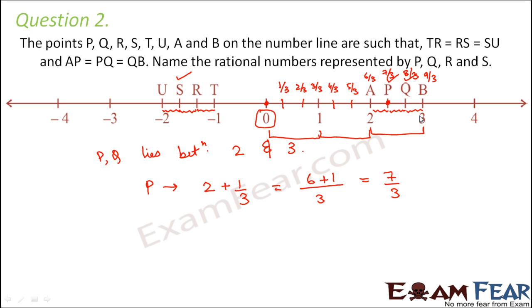So this is also another way of looking at it. So from both the approach, what do you see? You see that point P is 7 by 3 and point Q is 8 by 3. So this is how we found out P and Q.